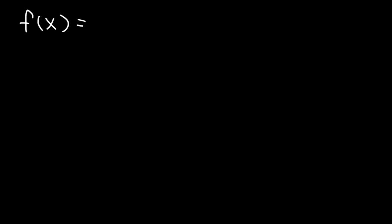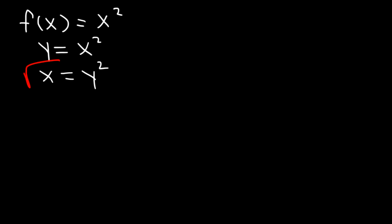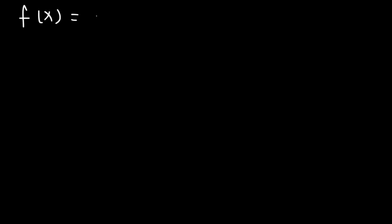Consider the graph f of x is equal to x squared. Let's find the inverse of this function and graph it at the same time. So y is equal to x squared. To find the inverse, we switch x and y and isolate y. So y is equal to plus or minus the square root of x, which is the inverse function.